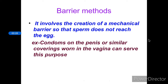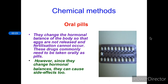The second method is chemical methods — that is oral pills or oral tablets. When a person takes this type of pill, it changes the hormonal balance of the body so that eggs are not released and fertilization cannot take place. If the egg is not released, fertilization definitely cannot occur. These drugs commonly need to be taken orally. Because they lead to hormonal changes, there can be side effects when people take these oral pills.